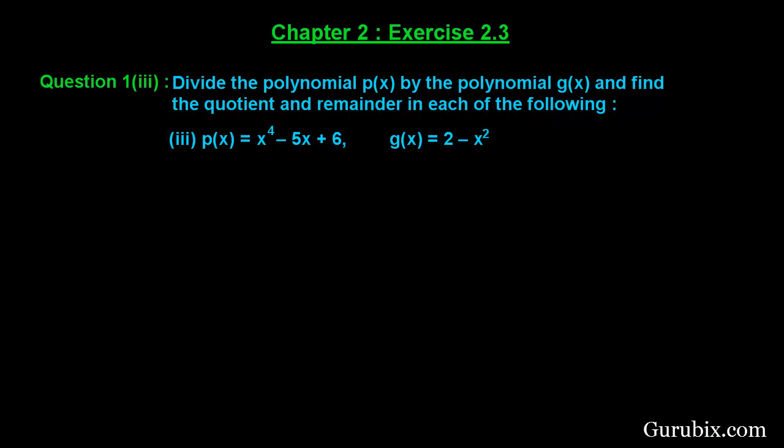Welcome friends. Let us solve the third part of question number 1 of exercise 2.3 of chapter 2. The question says: divide the polynomial P(x) by the polynomial G(x) and find the quotient and the remainder in each of the following cases. Let us see how to do it.